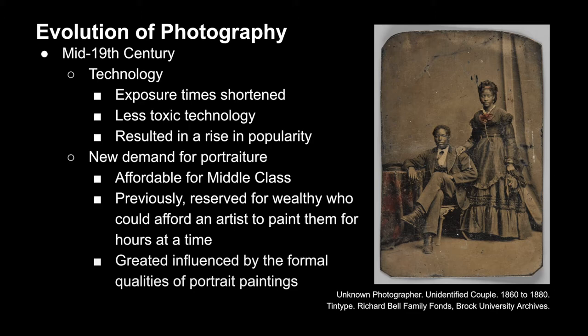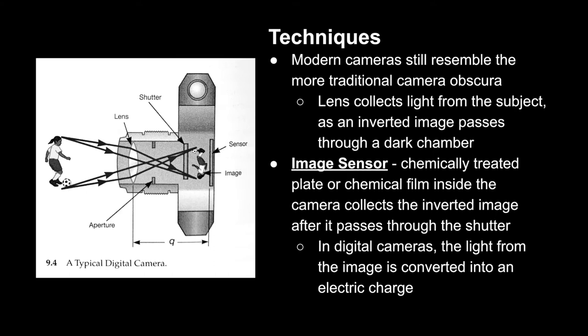Moving on to the modern camera, there's still a great resemblance to the traditional camera obscura. Light is still passing through a pinhole onto the back wall of a dark chamber. This inverted image is now hitting an image sensor, which is a chemically treated plate or chemical film inside the camera — on the far right, in the back of the camera, as shown in the image here.